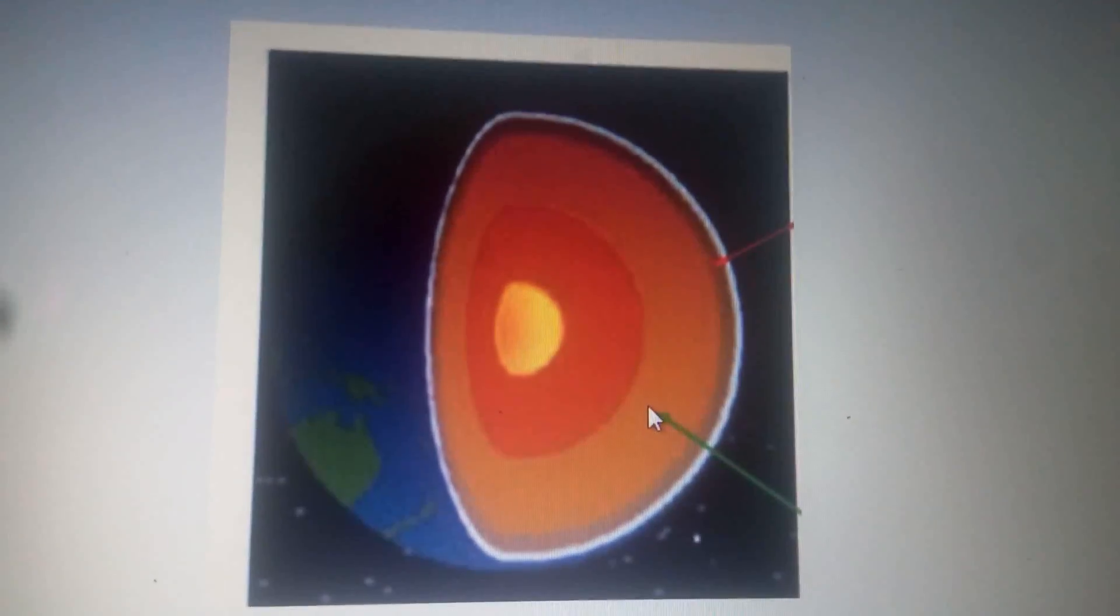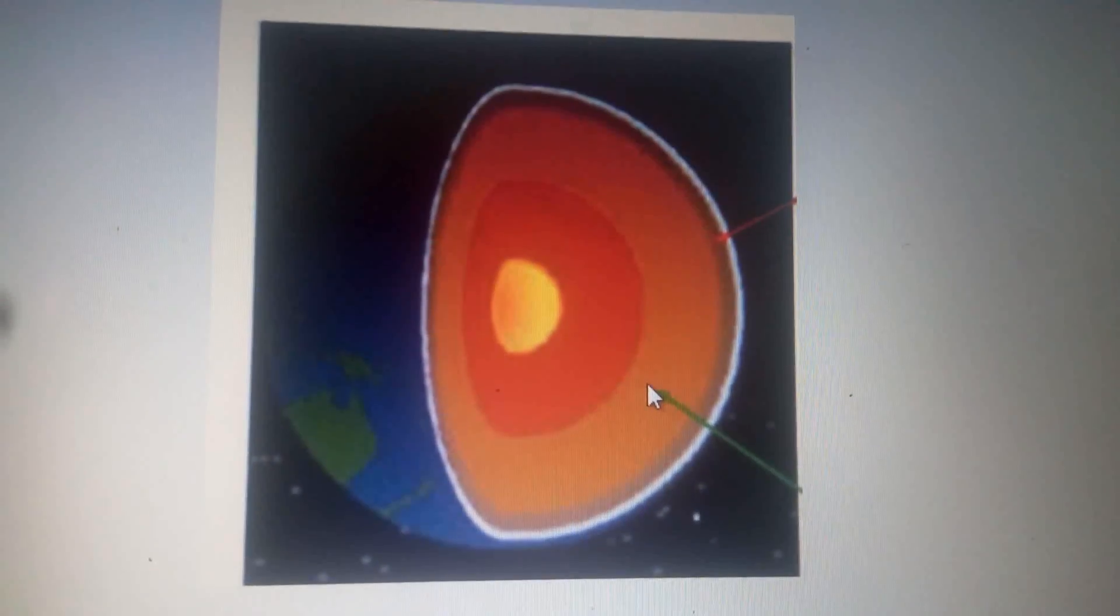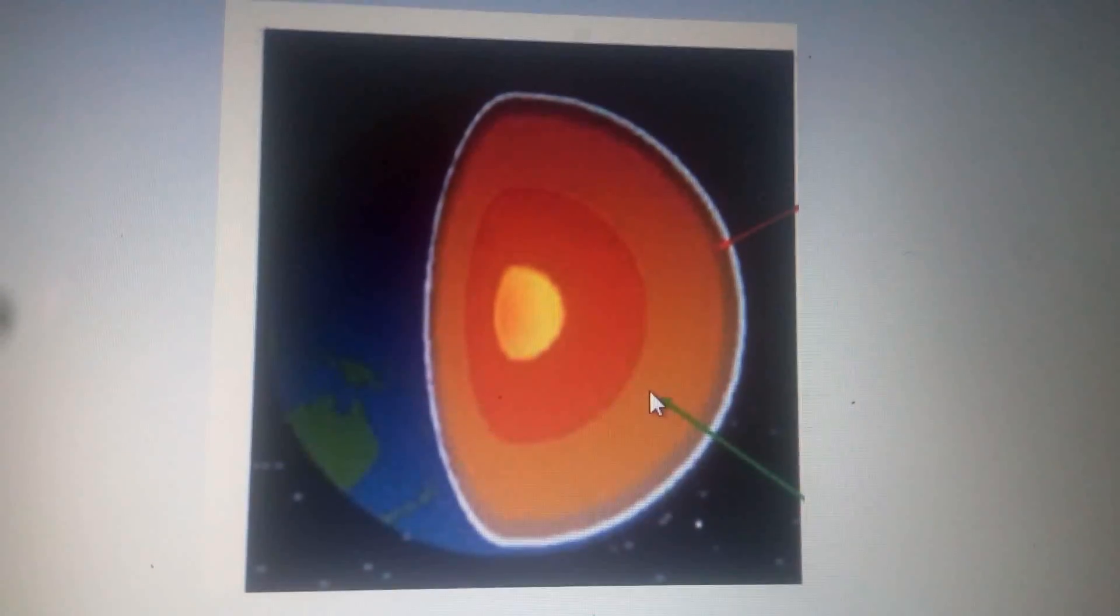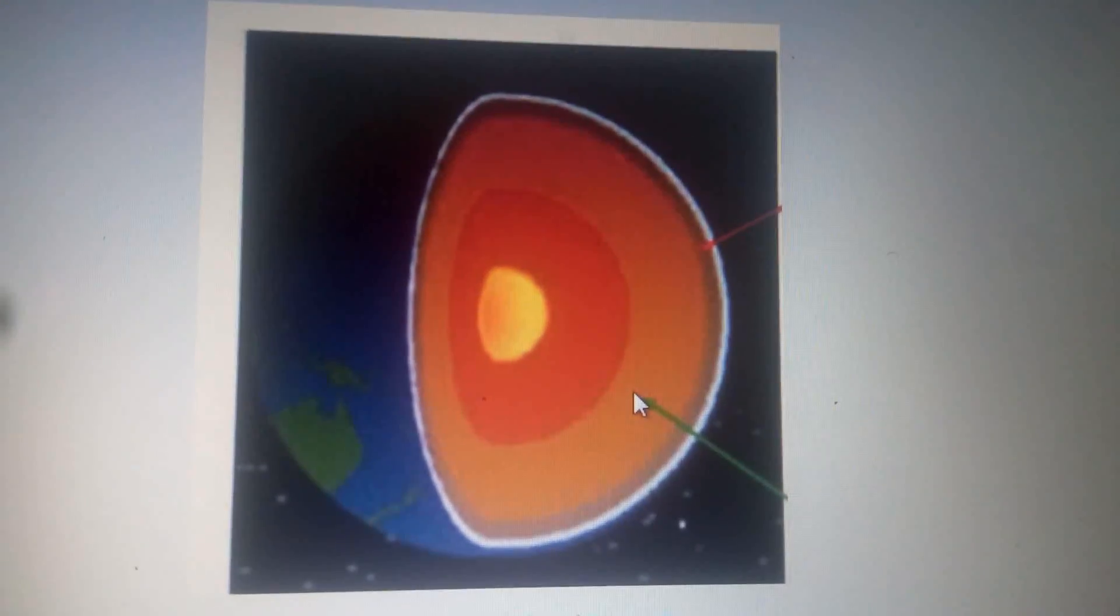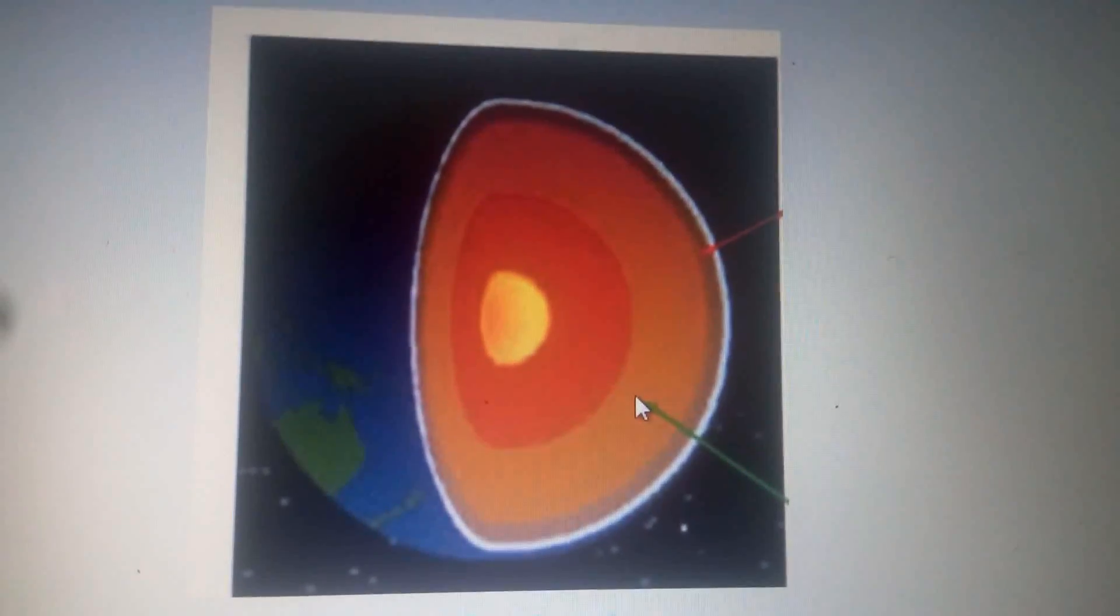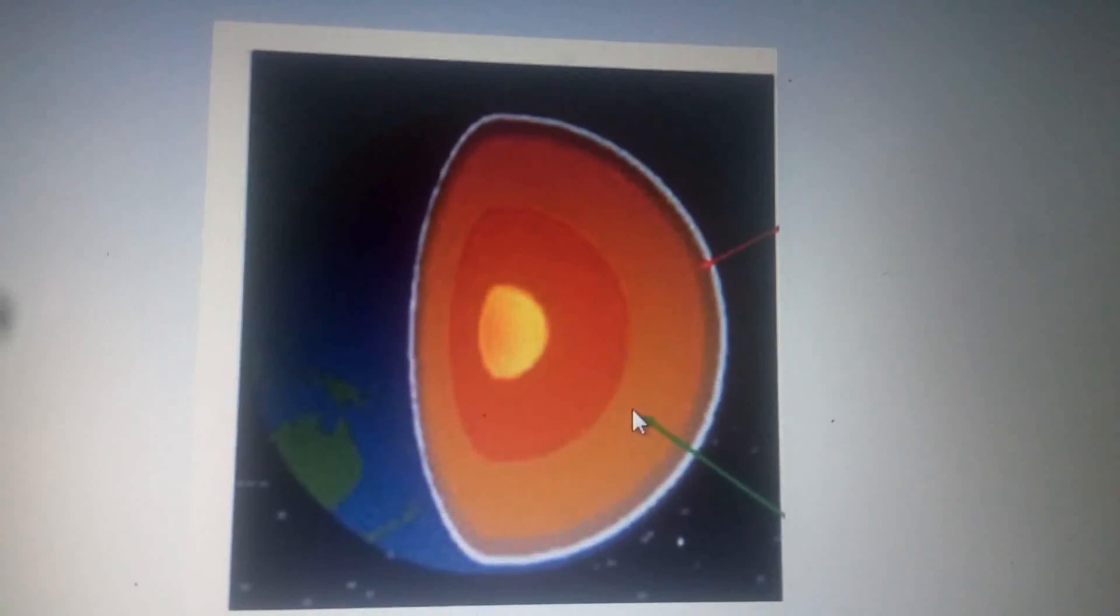The temperature increases downwards through the mantle to about 2,200 degrees Celsius near the core.